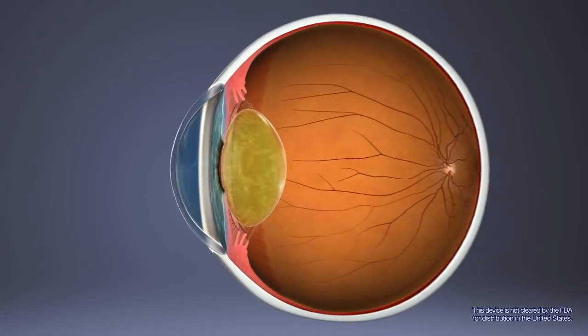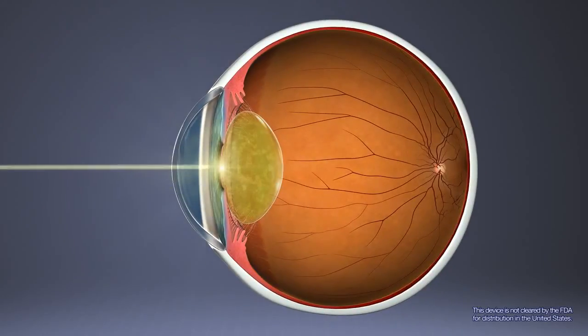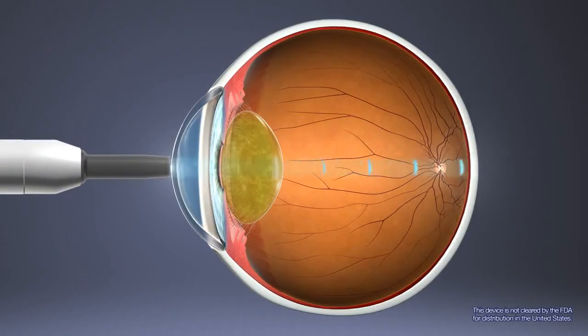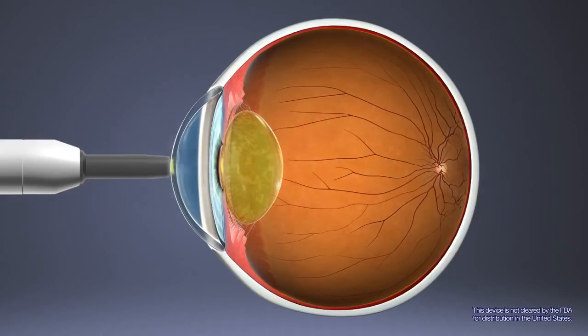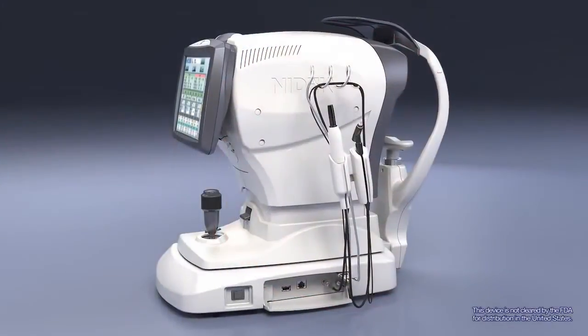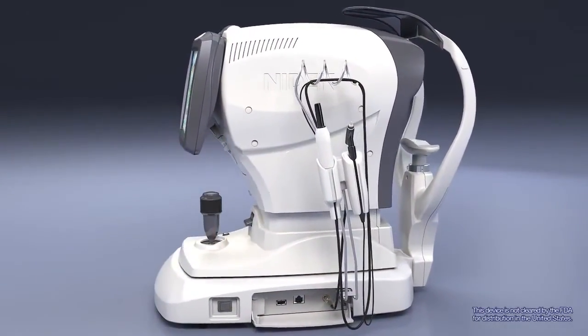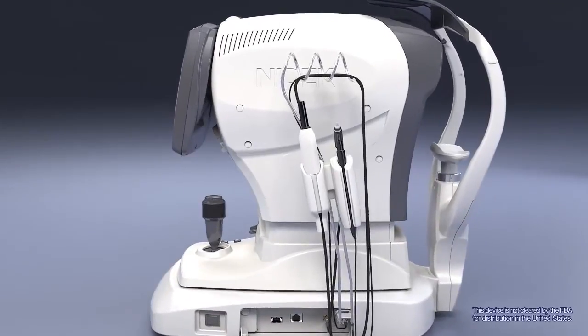For rare cases when the optical biometer is unable to measure axial length due to an extremely dense cataract, an optional built-in ultrasound biometer is available, saving you money and valuable office space in your practice.